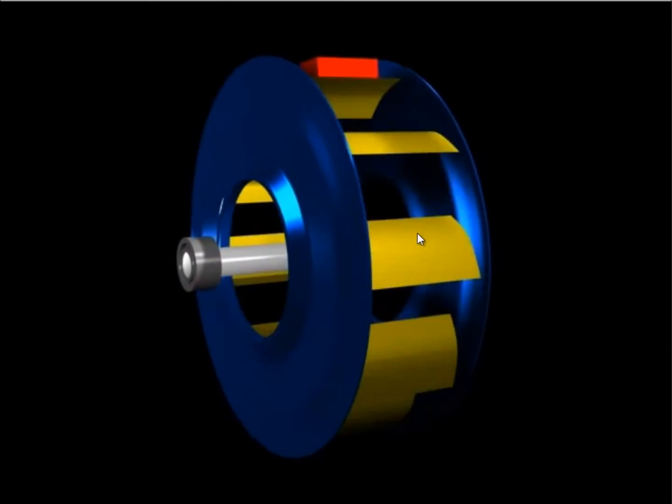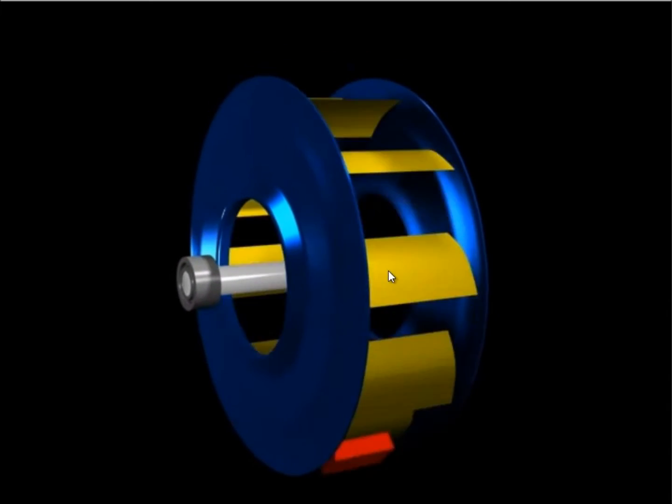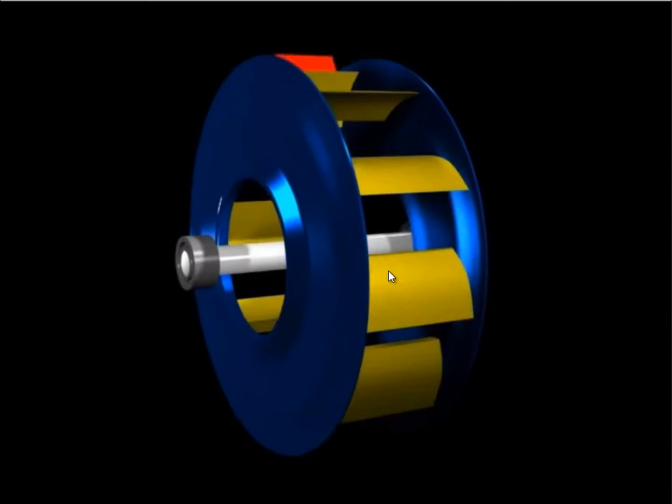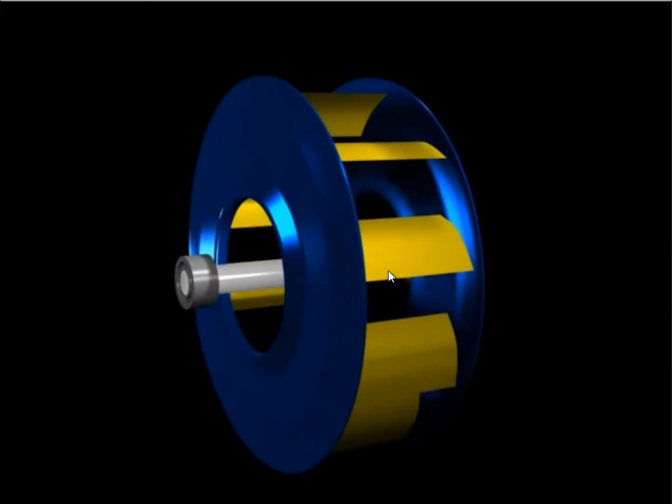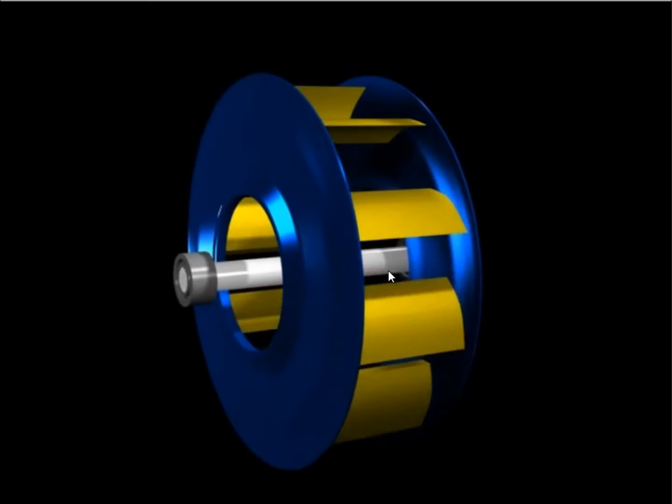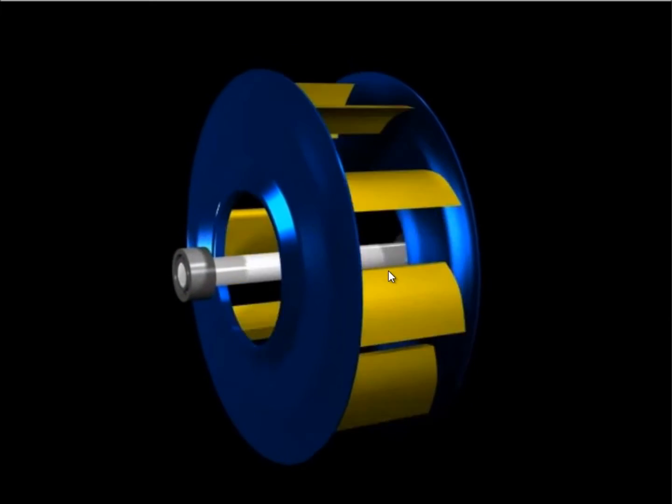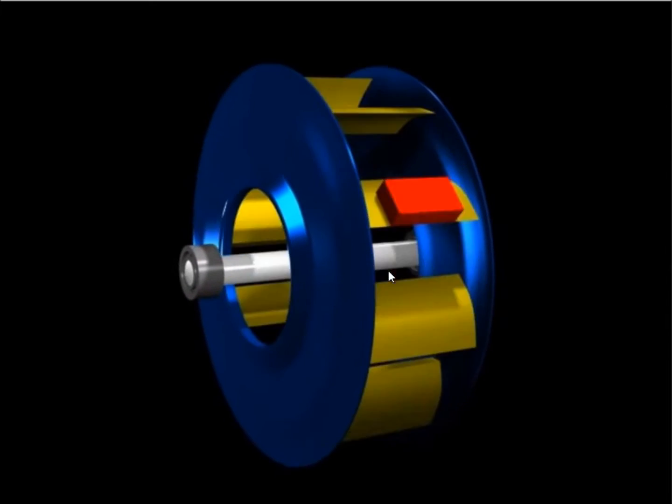Notice also in the case of static unbalance that the two ends of the rotor are moving up and down and from side to side in sync, so there's zero phase difference between the ends. Now it might not be exactly zero when you do this test, but it's close enough that you can say it's static unbalance. And knowing that means you can do a single plane balance.